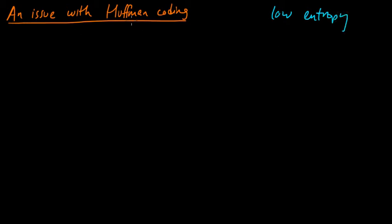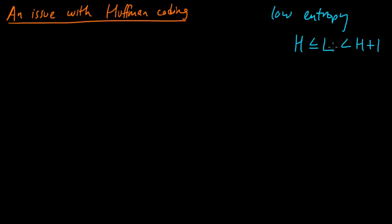We know that Huffman, since it's optimal, is always within one of the entropy. So the entropy is a lower bound on the expected codeword length, and for an optimal code, the expected codeword length is strictly less than the entropy plus one. The example we're going to give in this video can be generalized to show that the expected codeword length of the optimal code can get arbitrarily close to this upper limit. We'll see why that can be quite bad.